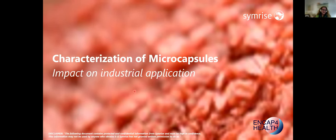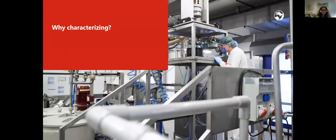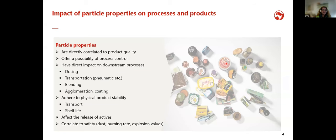Thank you for the introduction. We will talk about the impact of characterization of microcapsules on industrial applications: why we characterize particle properties, particle and powder properties. We start with individual particles, move to bulk properties, and conclude. Why should we generally characterize particles? Because they have a direct relationship with processes and products. Particle properties are directly correlated to product quality and offer the possibility to control our processes — monitoring particle properties lets us see immediately if a process went wrong or well.